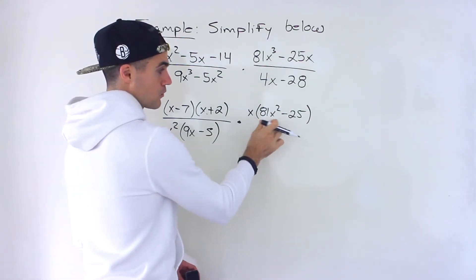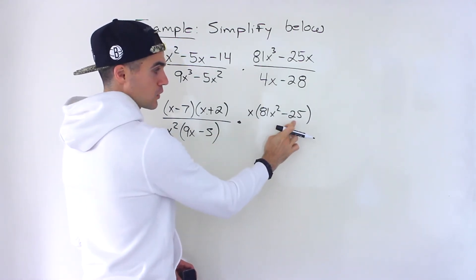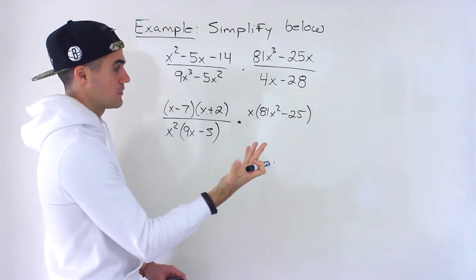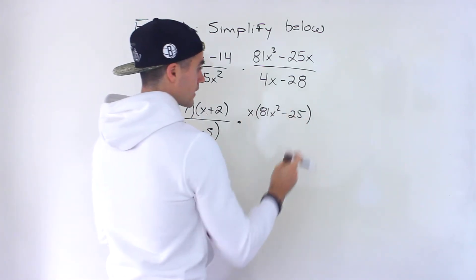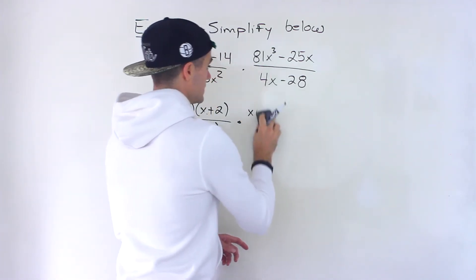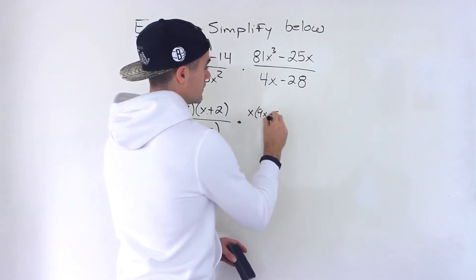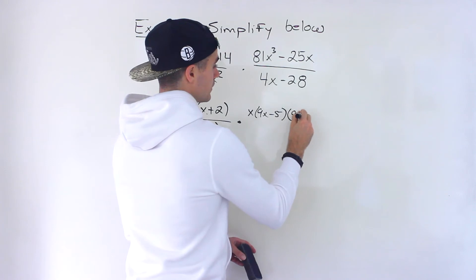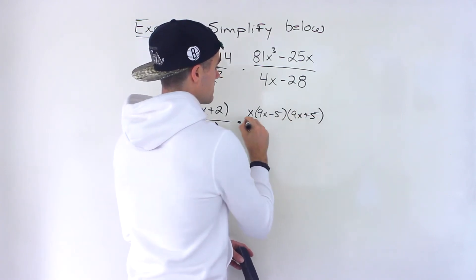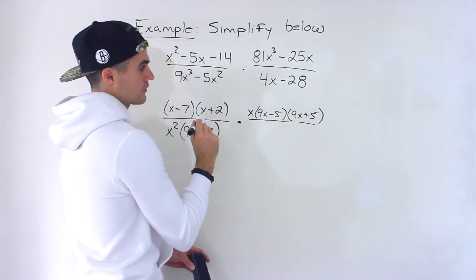You could square root 81x squared, that would be 9x. Square root 25, that would be 5. So we can rewrite this bracket as 9x minus 5, 9x plus 5, like that. And then that doesn't factor any further.